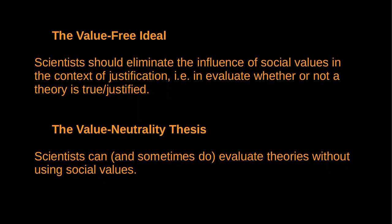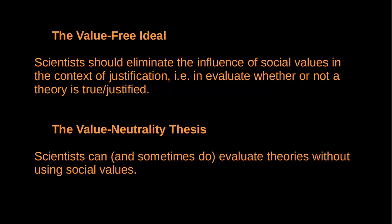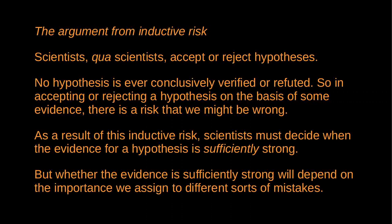So that's the general idea. There are, however, some important challenges to value neutrality and to the value-free ideal. In this video we'll look specifically at the argument from inductive risk, which was most famously presented by Richard Rudner in the article 'The Scientist Qua Scientist Makes Value Judgments.' Rudner begins by noting that scientists, in their capacity as scientists, must accept or reject hypotheses — that's a key part of the process of science, in the context of justification.